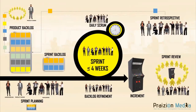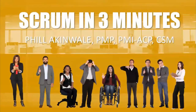To summarize Scrum: three roles — product owner, Scrum master, and developers; five ceremonies officially recognized — sprint planning, the sprint, sprint review, sprint retrospective, and daily Scrum; and three artifacts — product backlog, sprint backlog, and increment. I hope you found this helpful. Hit like, subscribe, and hit the bell icon so you'll be notified when I come online with more videos.